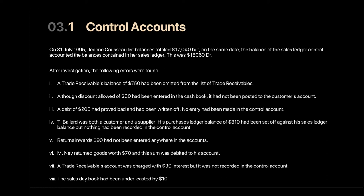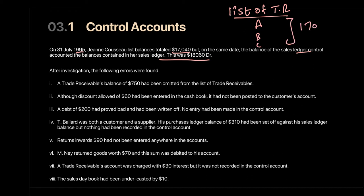After reviewing the errors that could impact the control account and the list, let's apply that concept. On 31st July, the list of balances totaled 17,040, but on the same day the sales ledger control account balance was 18,060. When they drew the list of trade receivables from individual accounts they got 17,040, but from the sales ledger control account via day books they got 18,060. These two figures differ, meaning there are errors to correct.